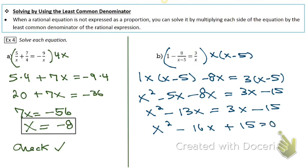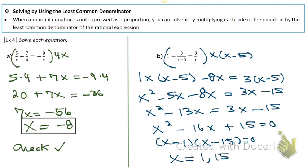You have to factor by finding two numbers that multiply to positive 15 and subtract to negative 16. Then you want to double-check to make sure they both work in the equation — and they do — so you've got your answers.